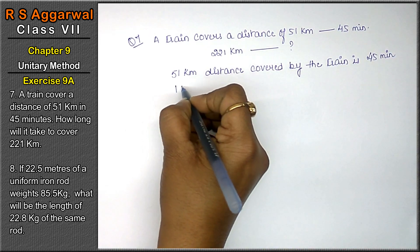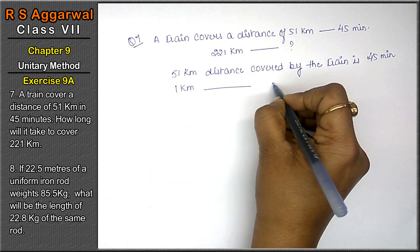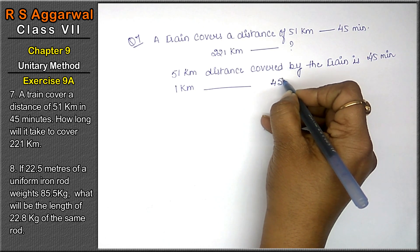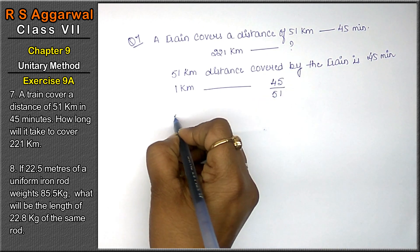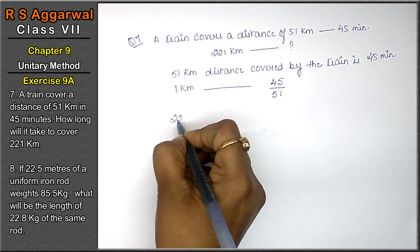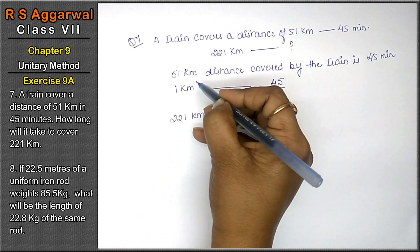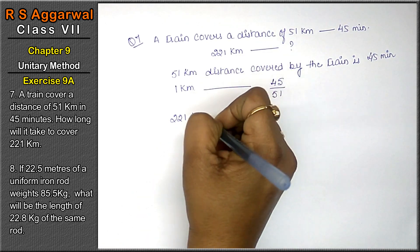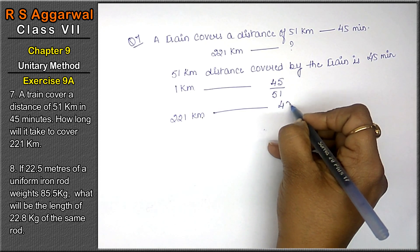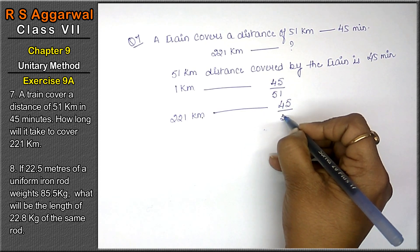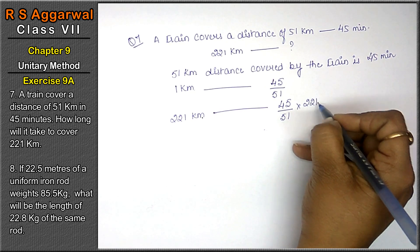So, 1 km distance — how many minutes will it take to travel? That is 45 divided by 51. And for 221 km distance, we have to find the time. We always take the same units. So it is 45 upon 51 into 221.